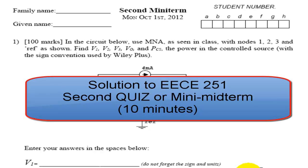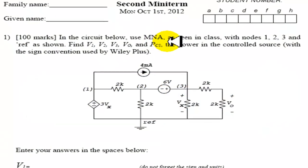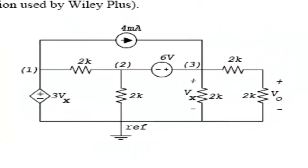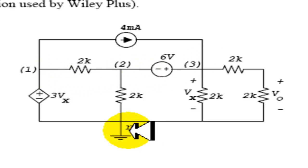Let's solve our second minimeter. In the circuit below, use MNA as was seen in class with notes 1, 2, 3 and the reference as shown. Find V1, V2, V3, V0 and the power in the controlled source.